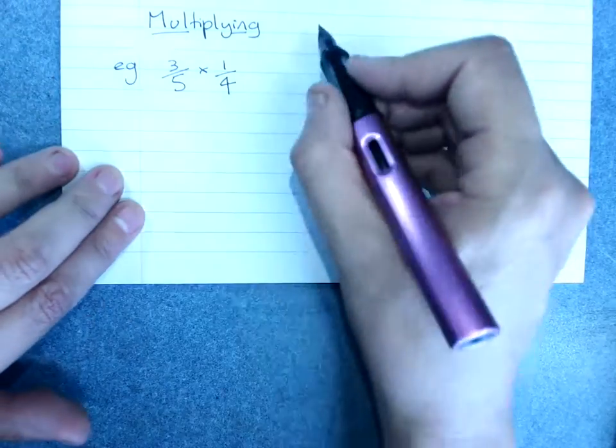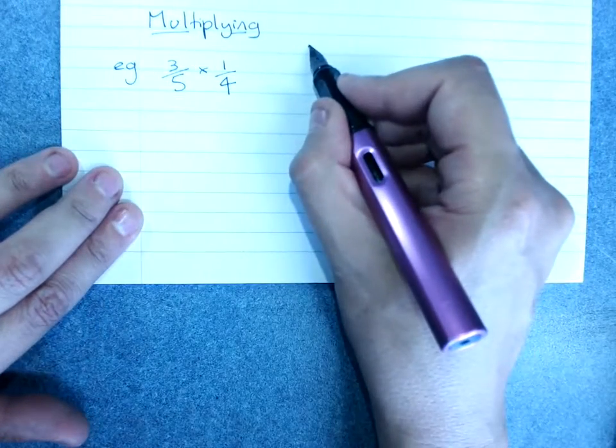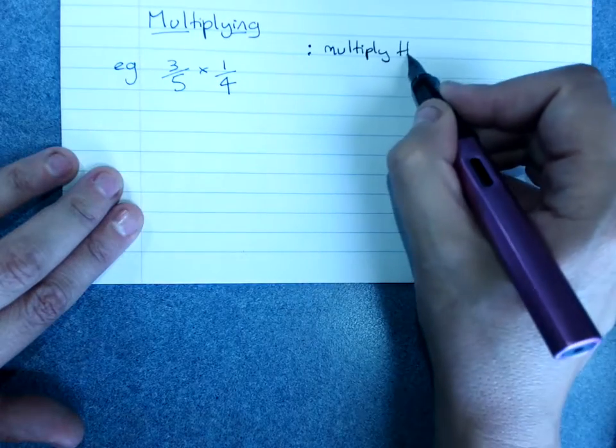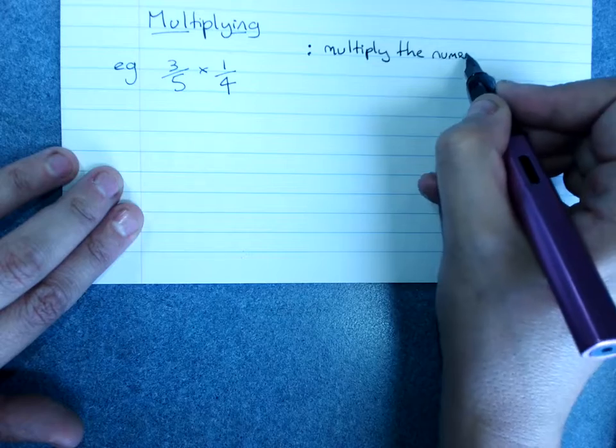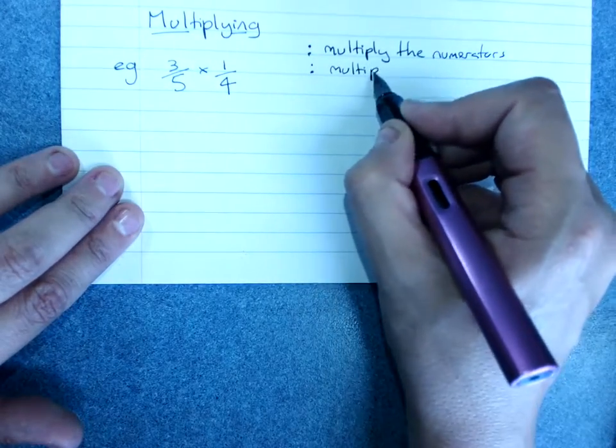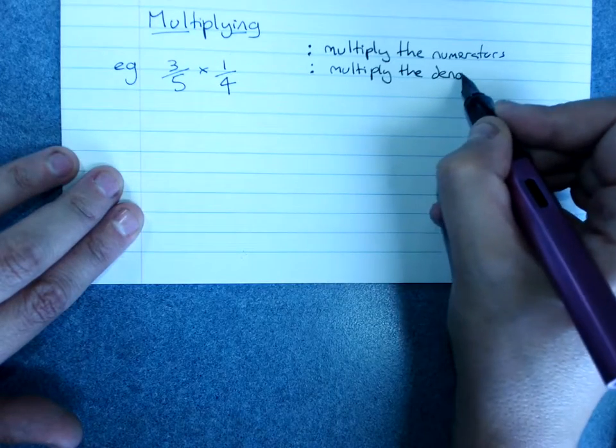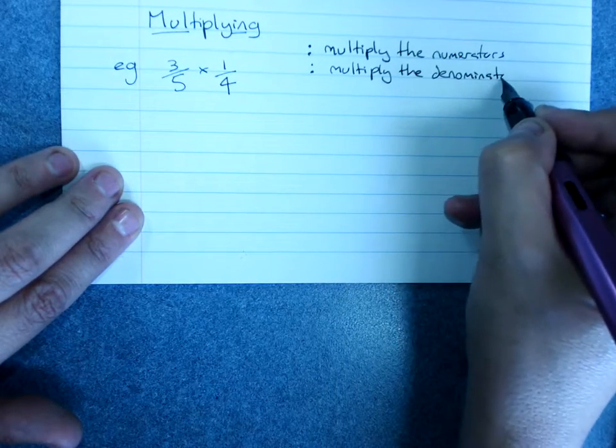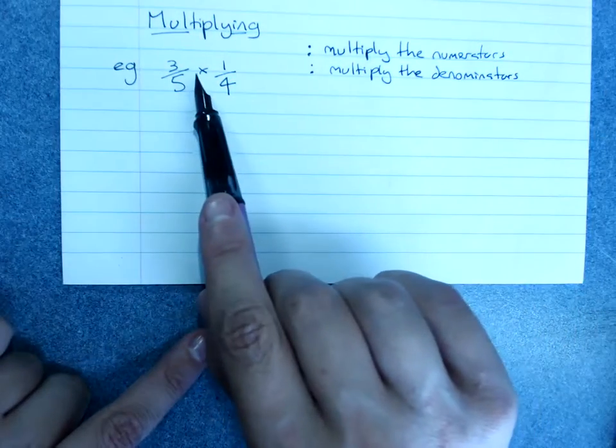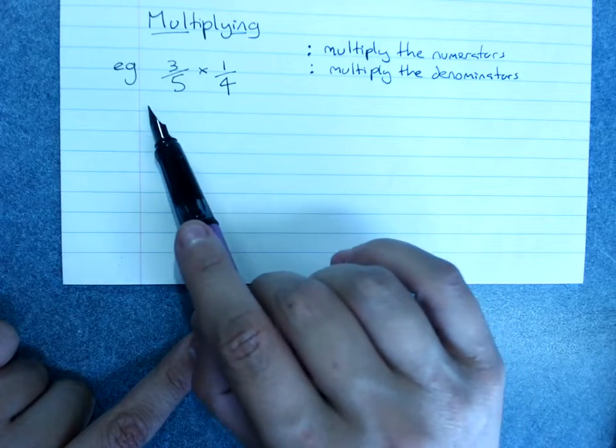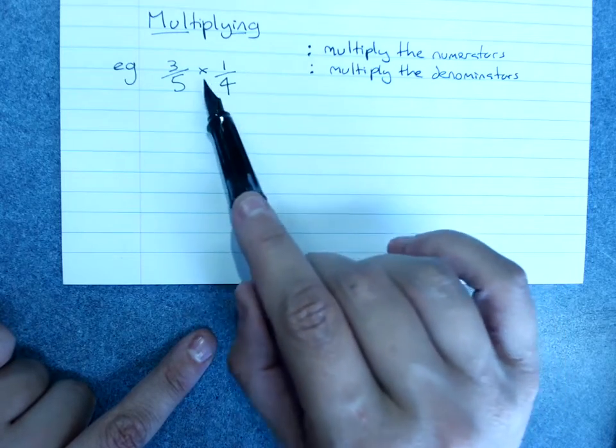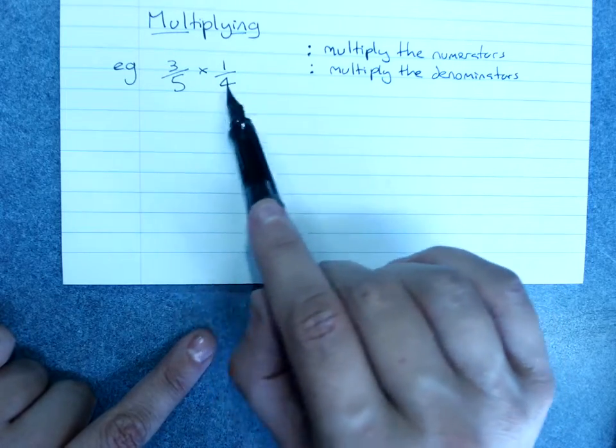Multiplying has different rules. It does not need a common denominator. All you do is you multiply the numerators and you multiply the denominators. Now just worth remembering, times in maths is of. So this is actually saying 3 fifths of 1 quarter or 1 quarter of 3 fifths because multiplying can work either way.